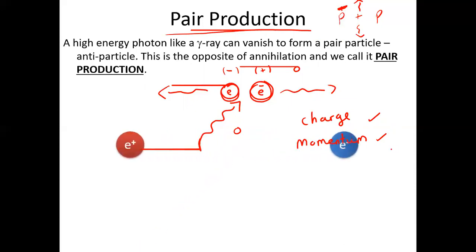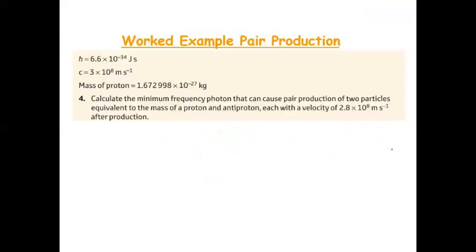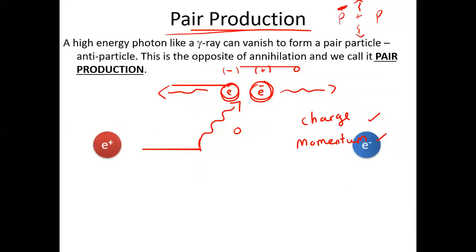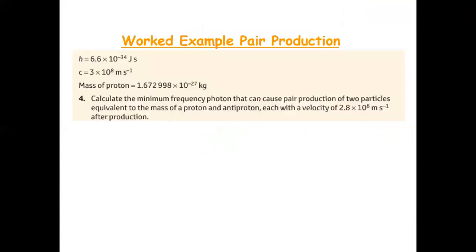There's the photon appearing on screen now. Pair production is exactly the opposite of annihilation and the questions are very similar. Here's the question: calculate the minimum frequency photon that can cause pair production of two particles equivalent to the mass of a proton and an antiproton, each with a velocity of 2.8 times 10 to the power of 8 meters per second after production.